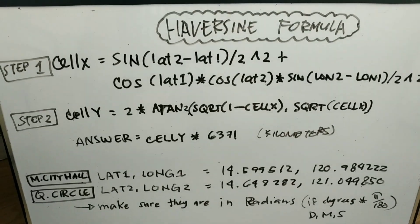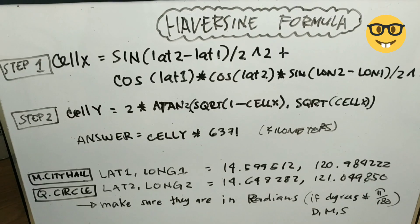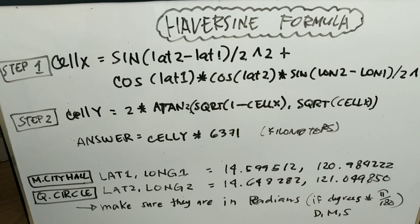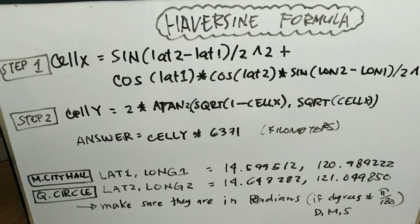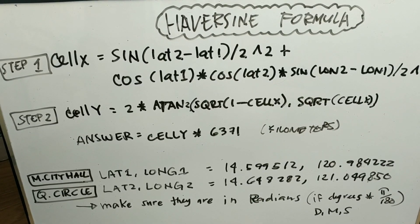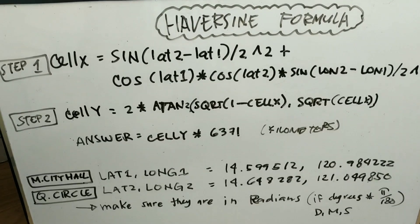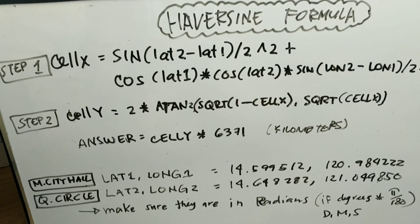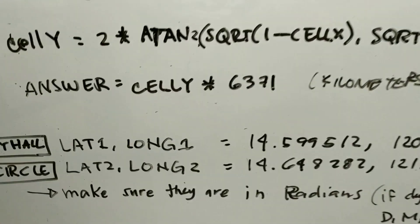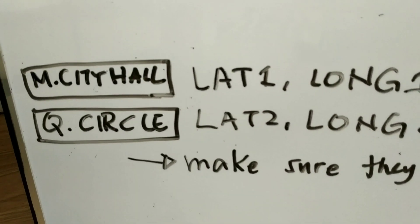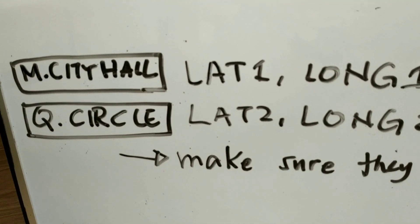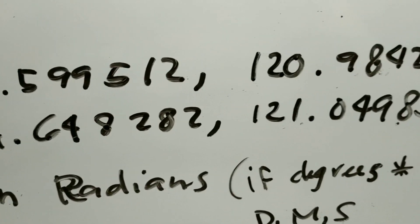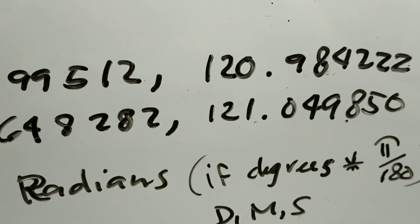So, when do we use the Haversine Formula? Usually, we use this to get the distance between two latitude and longitude pairs. For example, we took the latitude and longitude of Manila City Hall — it's 14.599 and 120.842.